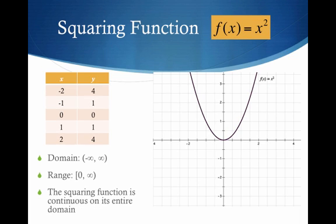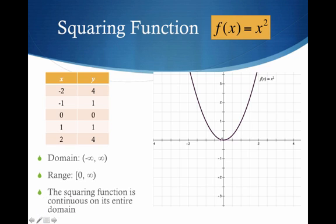The squaring function — simply f of x equals x squared. For every x I plug in, the y is squared. This is the U, the smiley face, the normal parabola — all these different ways of saying it. The domain is negative infinity to infinity, but the range runs from 0 to infinity — that's the only part of the y-axis we're using here. The squaring function is continuous.